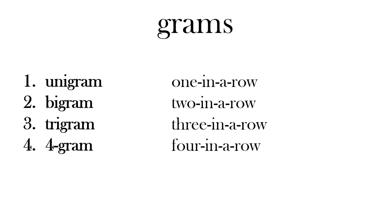The same applies to grams. A unigram is one in a row, a bigram is two in a row, a trigram is three in a row, a fourgram is four in a row. If you have more than four it will be that number followed by 'gram' — so six would be sixgram, ten would be tengram. N-grams refer to how many consecutive items there are, and we use this with text, so it refers to words.